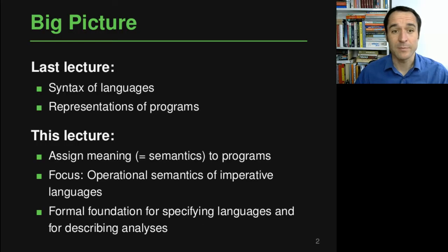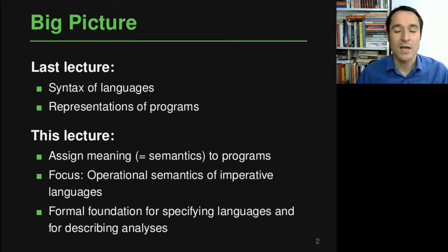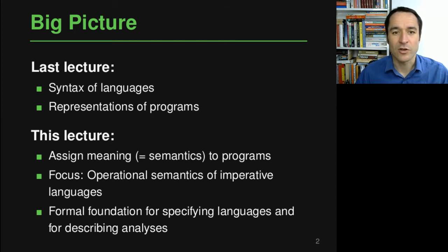Hi, hello and welcome to the second lecture in the program analysis course. In this second lecture we will look into operational semantics. The lecture will be composed of five parts, and this is the very first of these five parts. In the last lecture we looked at the big picture of what programming languages are, since they are at the foundation of program analysis. Today we want to look at how we can assign meaning to programs written in a language.